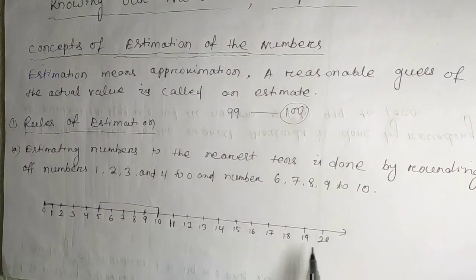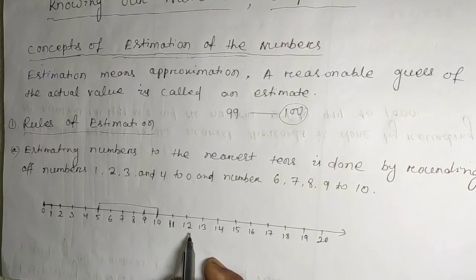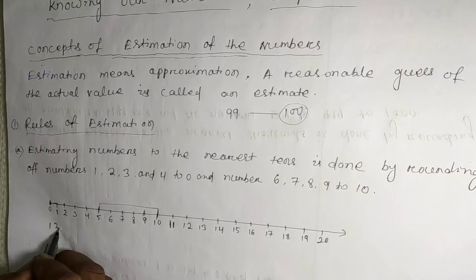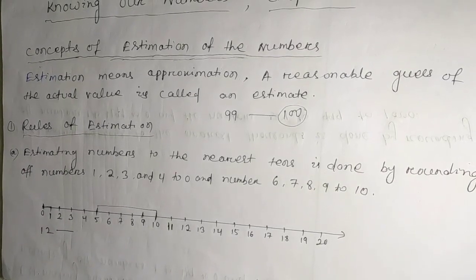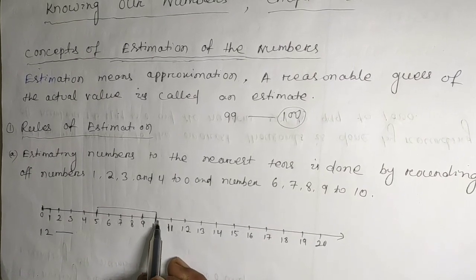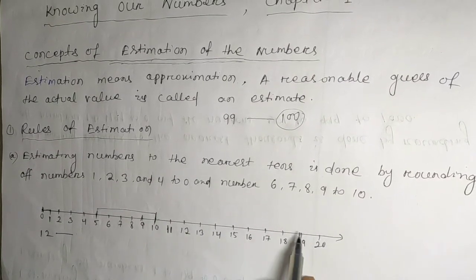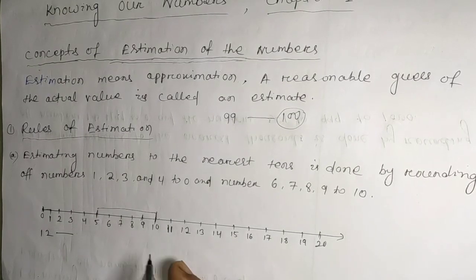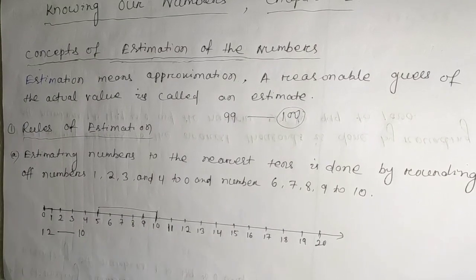Using this rule, we round off numbers. Suppose 12 — what will be the round off of 12? 12 is closer to 10 and farther from 20, so the round off of 12 is 10.